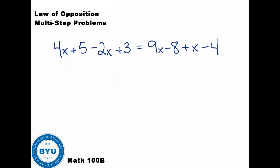Here's one that's a little crazier. We'll have to work on getting all the x's to one side. I'm going to go ahead and combine the like terms first. So here we get 4x minus 2x, that leaves us with 2x. And here we have 5 plus 3, well that's 8. Over here we have 9x plus an x, that's 10x. And negative 8 minus 4 is negative 12.